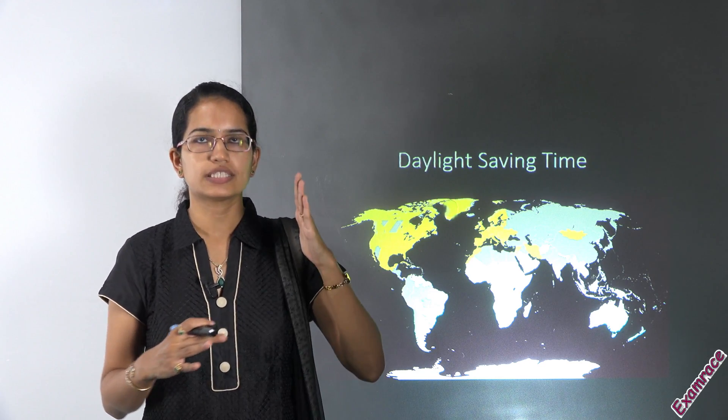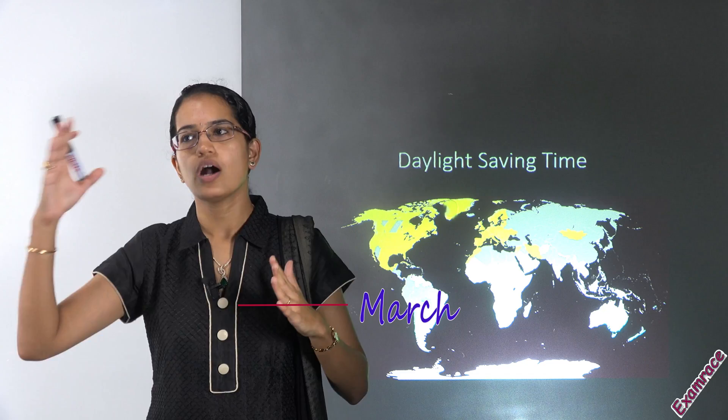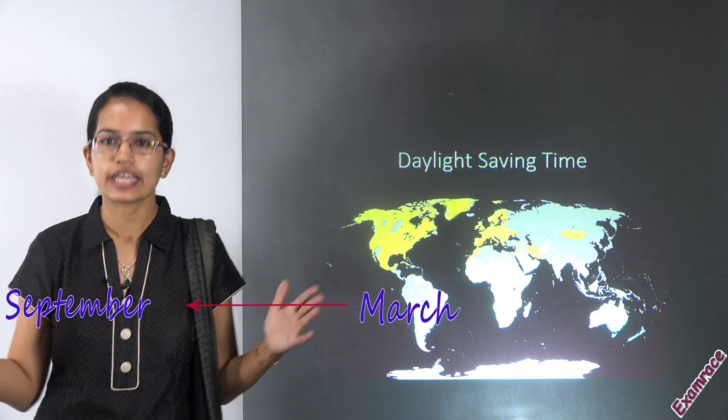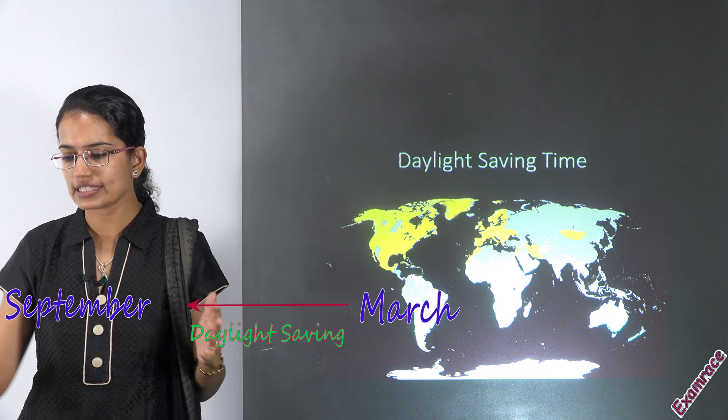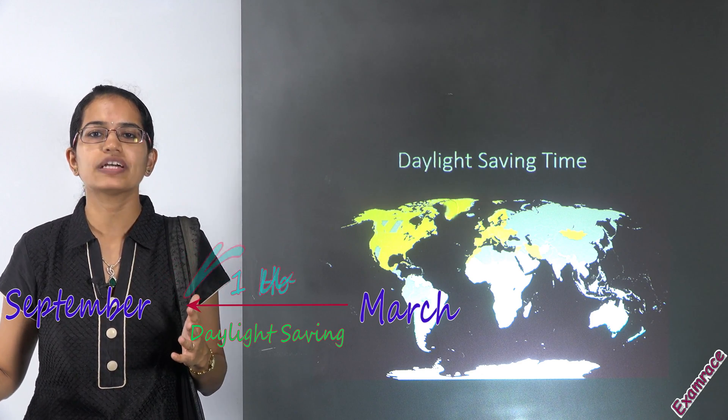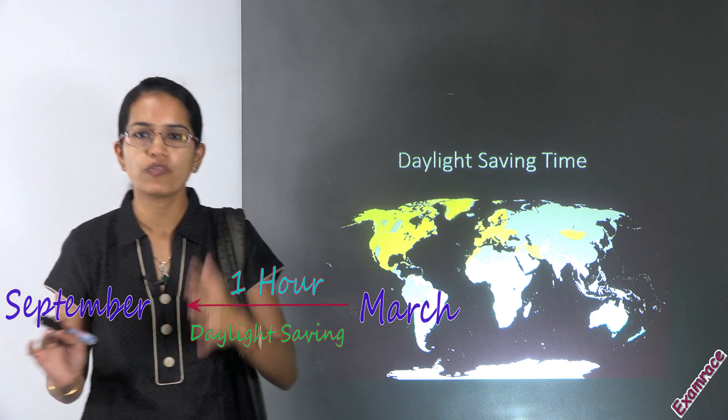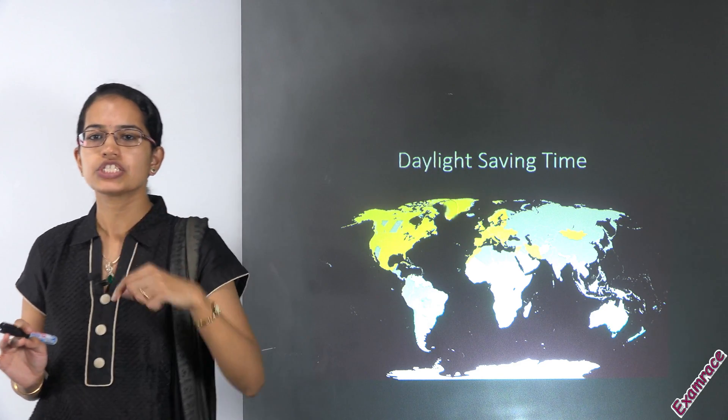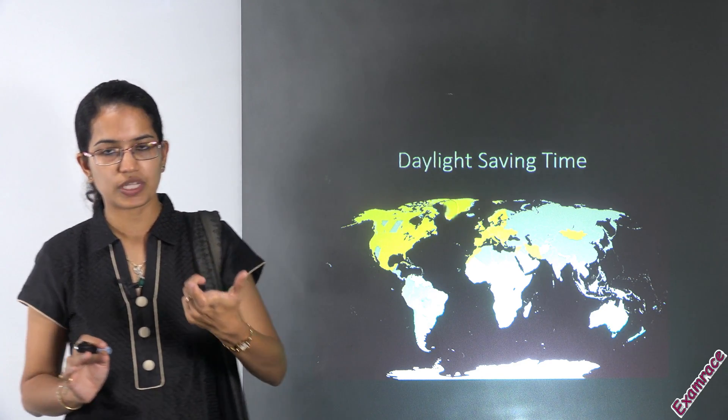During the months from March to September you have a daylight saving. Now this daylight saving varies, usually it is 1 hour. However there is an exception with Lord Howe island in Australia where we shift our clocks 30 minutes only.